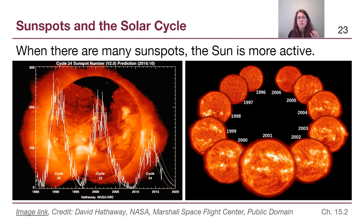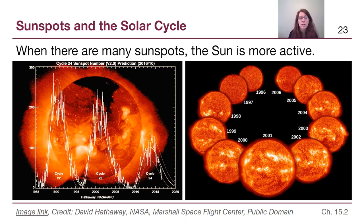When there are a lot of sunspots, the sun is more active. Looking at pictures from 1996, 2001, and 2006: in 1996 the number of sunspots was very low — this is called solar minimum. In 2001, the count was near its peak — we call this solar maximum. And in 2006, now 10 years later, the sun was back down to almost no activity, at solar minimum again.